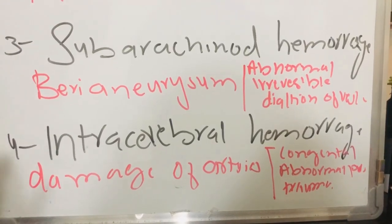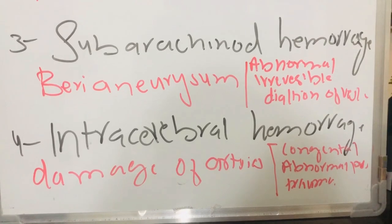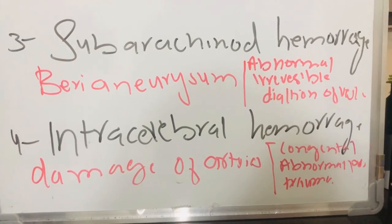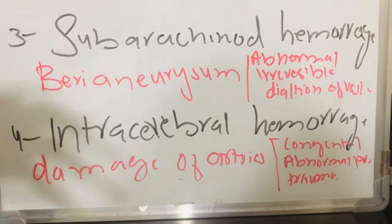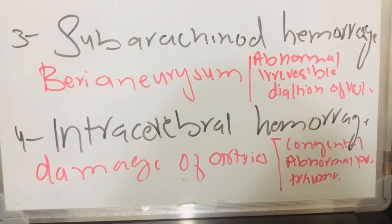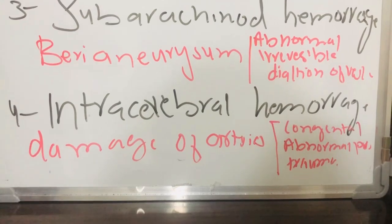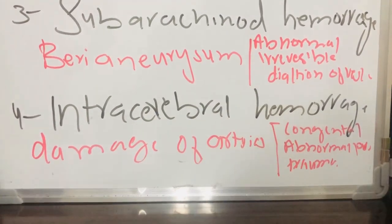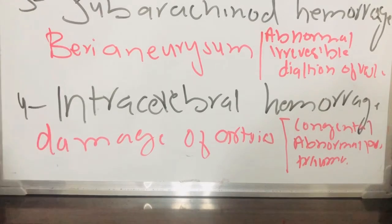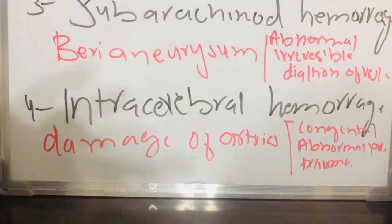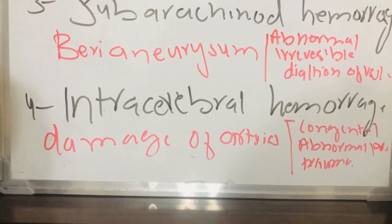Subarachnoid hemorrhage is due to an aneurysm — an abnormal, irreversible dilation of blood vessels. Lastly, intracerebral hemorrhage is due to damage of arteries. There can be different reasons: congenital abnormal development, abnormal pressure causing arterial rupture, or any trauma.